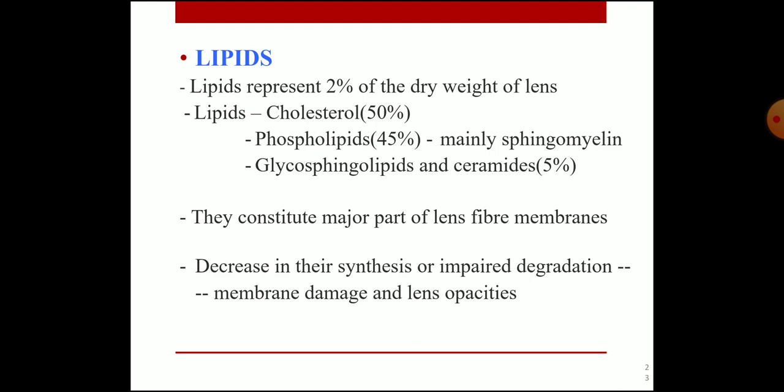Lipids represent 2% of the dry weight of the lens. They include cholesterol (50%), phospholipids (45%) — mainly sphingomyelins — and glycolipids and ceramides (5%). Lipids constitute the major part of the lens fibers; decreased synthesis or impaired degradation of these lipids produces membrane damage and lens opacity.